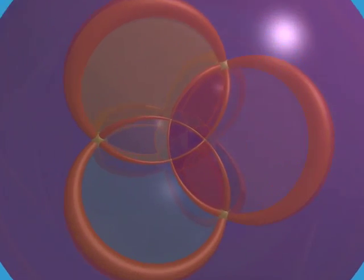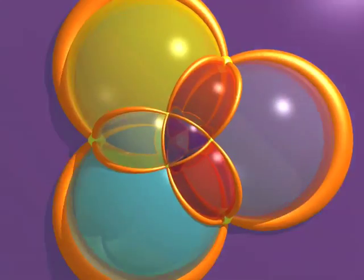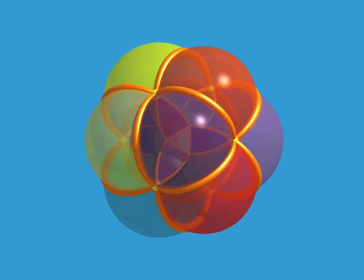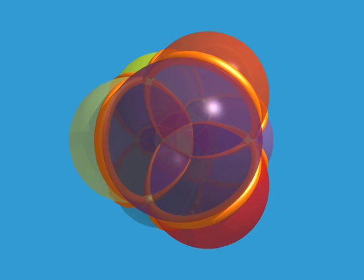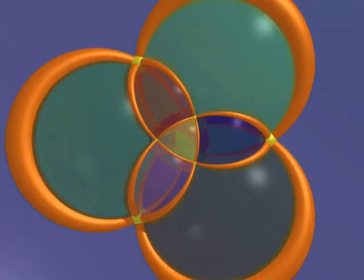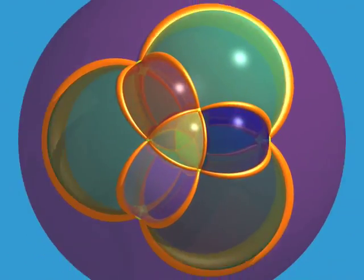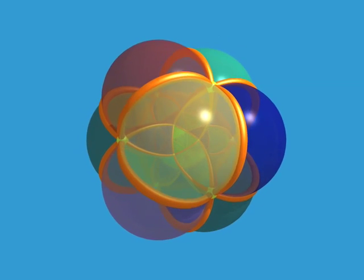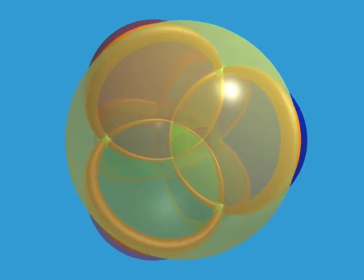24 vertices, 96 edges, 96 triangles, and 24 octahedra. Eight edges start at each vertex.